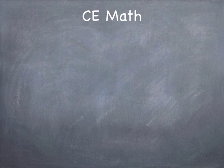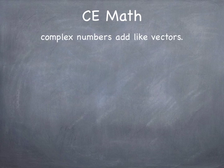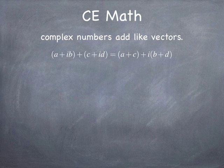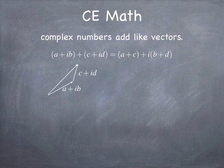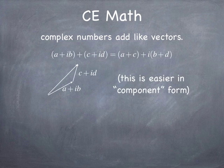How does complex exponential math — complex number math — work? It's pretty straightforward. Complex numbers add like vectors. When you're adding vectors, you add the x components together and the y components together. The same way with complex numbers: the real parts add, and the imaginary parts add. So it's easiest to do this kind of manipulation when the complex number is expressed as a real part plus an imaginary part.